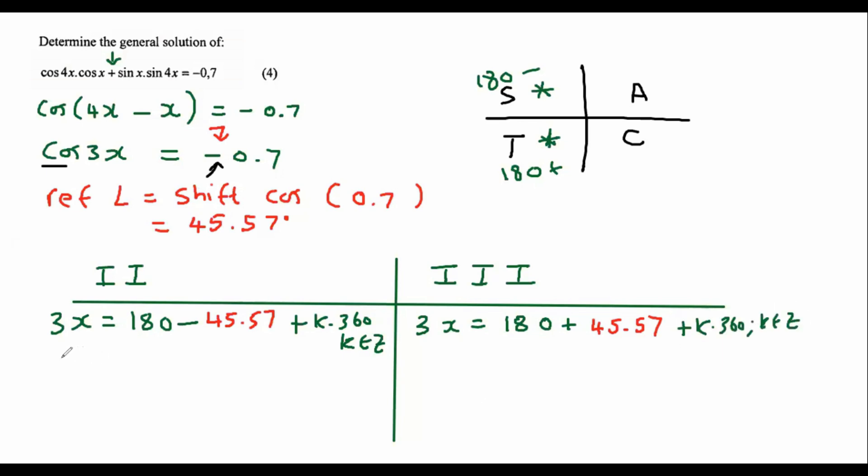And so what I'm going to do now is I'm just going to simplify a little bit. That's going to give us 3x equals 180 minus 45.57, which is 134.43 plus k times 360, k is an element of integers. And then what I'm going to do now is divide everything by 3. And so that's going to give me 44.81.